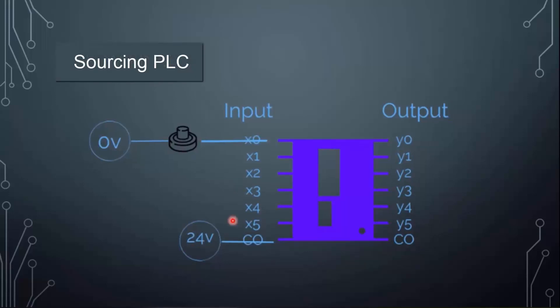The other type is sourcing the PLC. When the zero volt is connected with one of the inputs through a push button and 24 volts is connected with the common, the PLC is sourcing because 24 volts are coming out from one of the inputs. The push button is said to be a sinking push button because it allows the flow of current toward zero volts. So when 24 volts is connected with one of the inputs the PLC is sinking, and when 24 volts is connected with the common the PLC is sourcing.